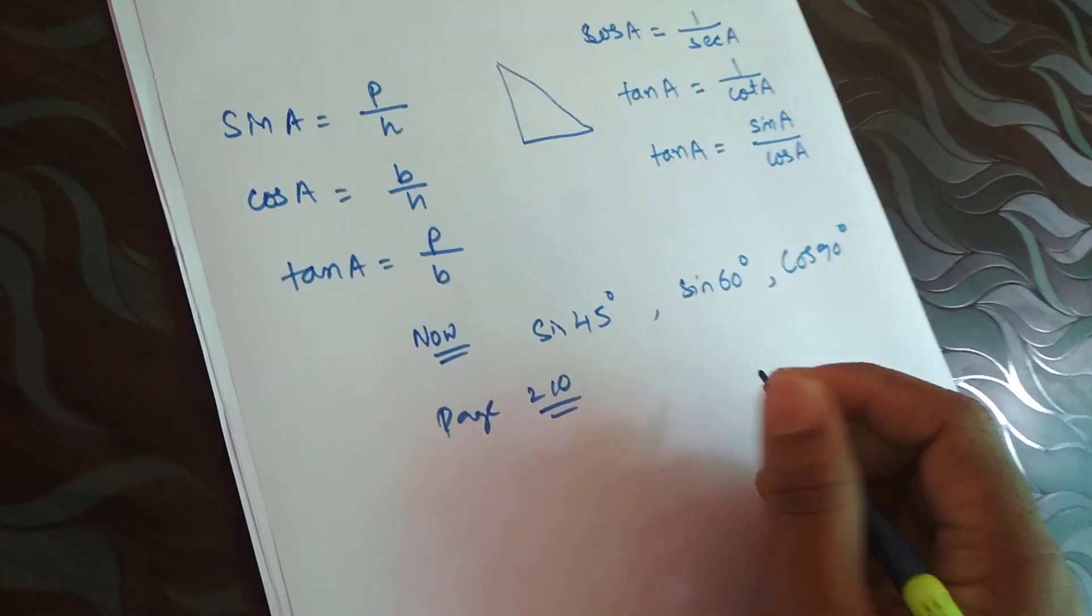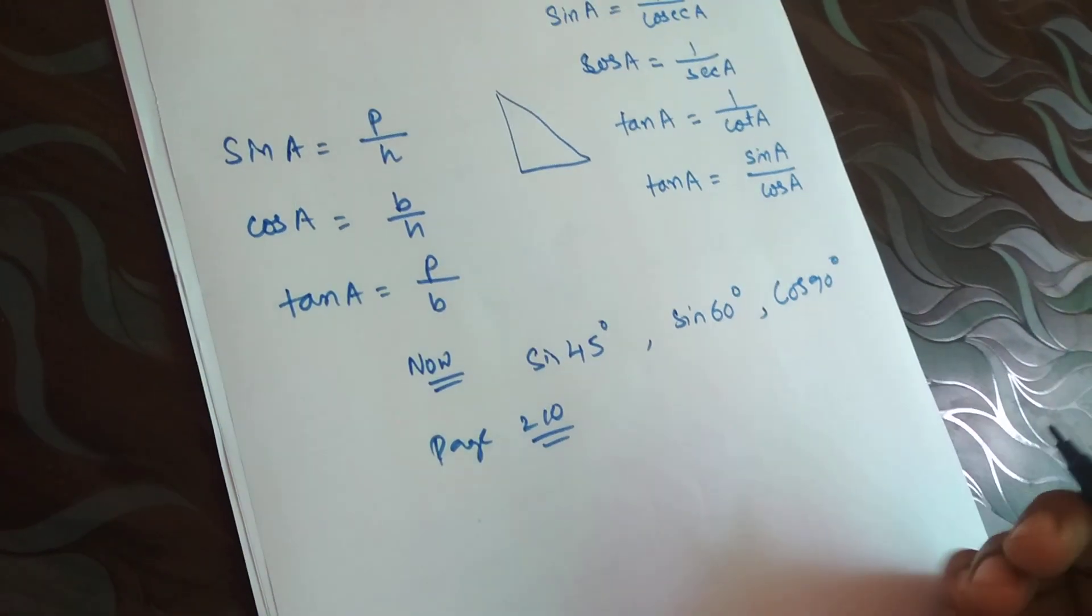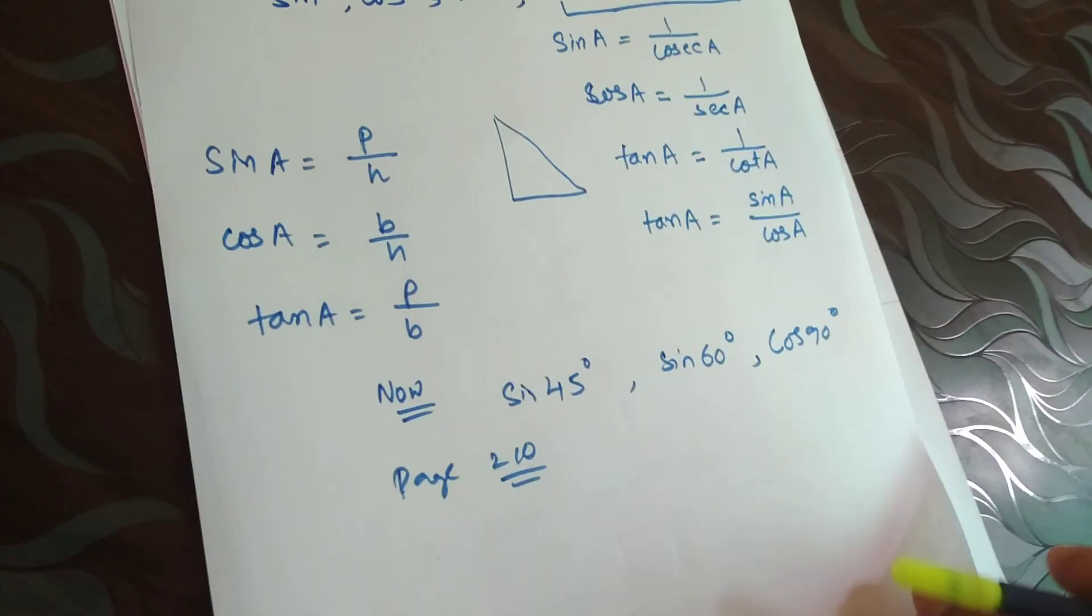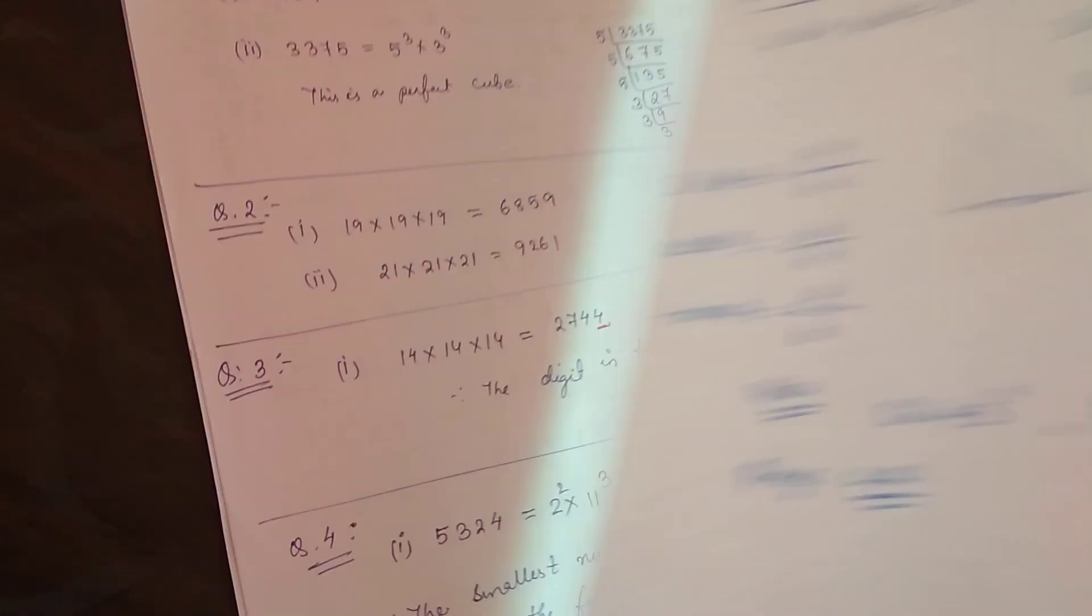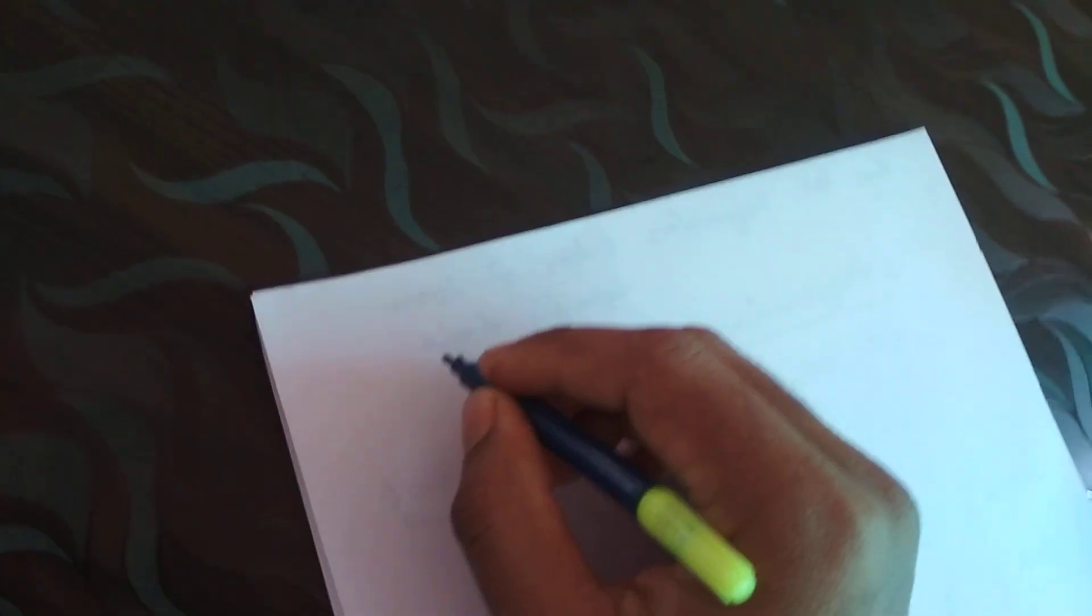So basically we are going to discuss how to draw the table - trigonometric ratios of some specific angles. I would request you to please listen carefully. Once you know how to draw this table, exercise 8.2 is done.